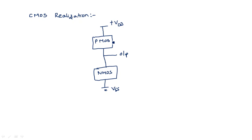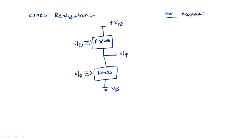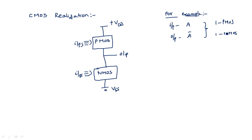For example, consider the inverter circuit. Complementary metal oxide semiconductor — CMOS — by default acts like an inverter. The PMOS and NMOS realizations give a complemented form at the output. For an inverter, input A gives output A-bar, so we need one PMOS transistor and one NMOS transistor, both with input A.